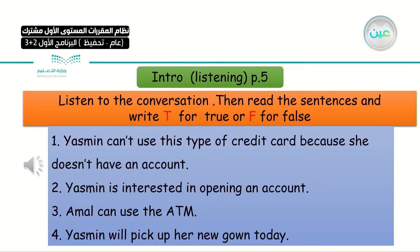Let's go deeper into the conversation and answer the questions. You're going to write T for true or F for false in front of each sentence. Sentence one: Yasmin can't use the credit card because she doesn't have an account. Two: Yasmin is interested in opening an account. Three: Amal can use the ATM. Four: Yasmin will pick up her new gown today. Look at the sentences carefully, then listen.